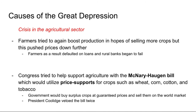What did farmers try to do? They said, if I boost production, maybe I can sell more crops and make more money. However, supply and demand: if you have such a gigantic supply, it's not scarce, so prices go down. You just have too much — it actually drives prices down further. Farmers couldn't recoup their money, they defaulted on loans, and the banks and rural communities that supported them actually began to fail themselves.